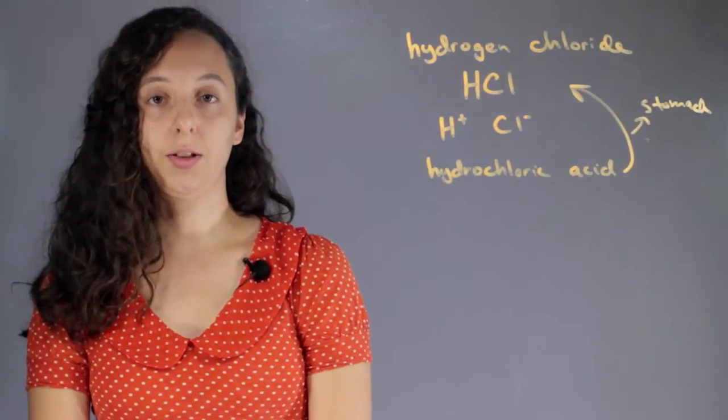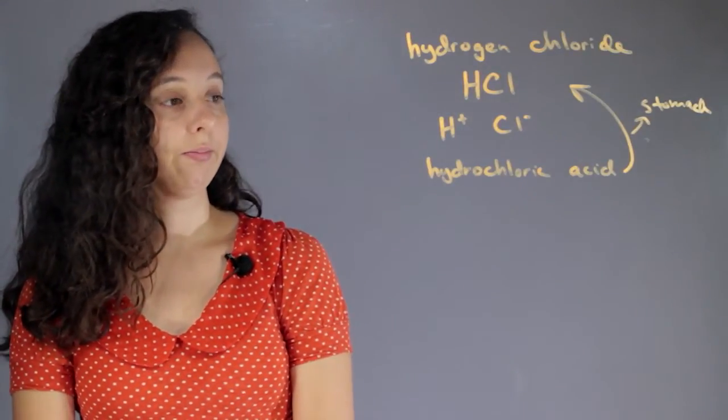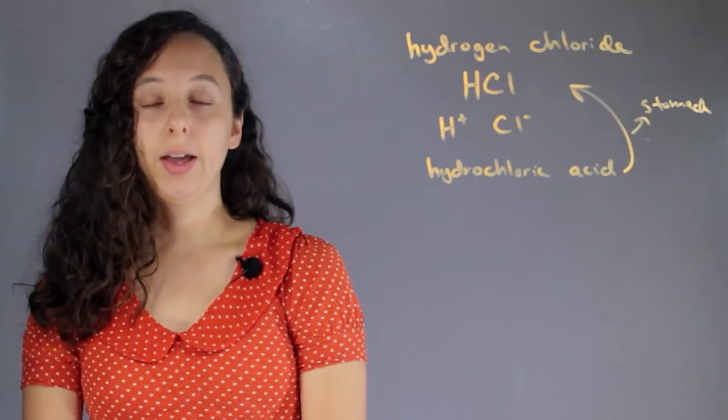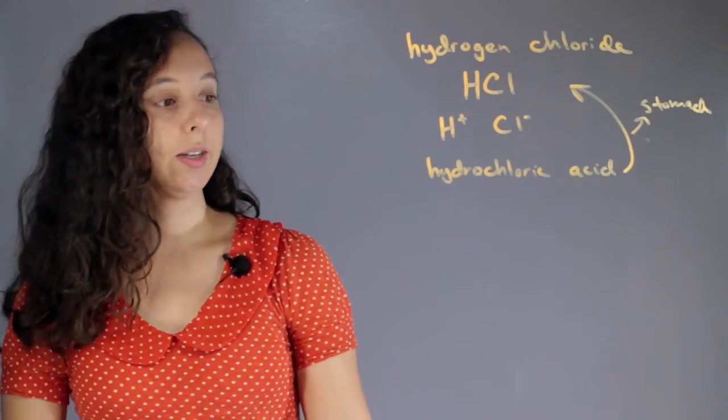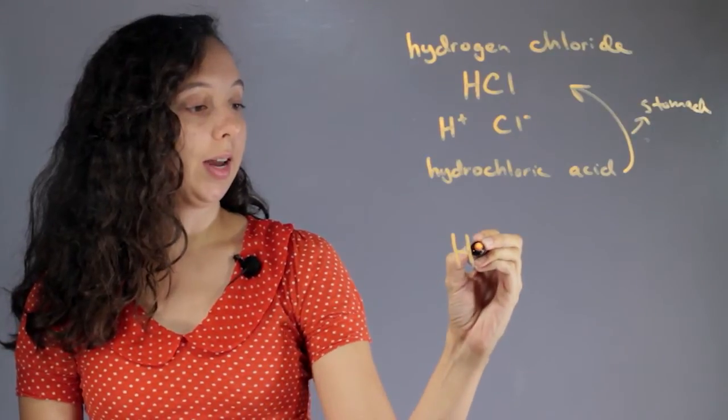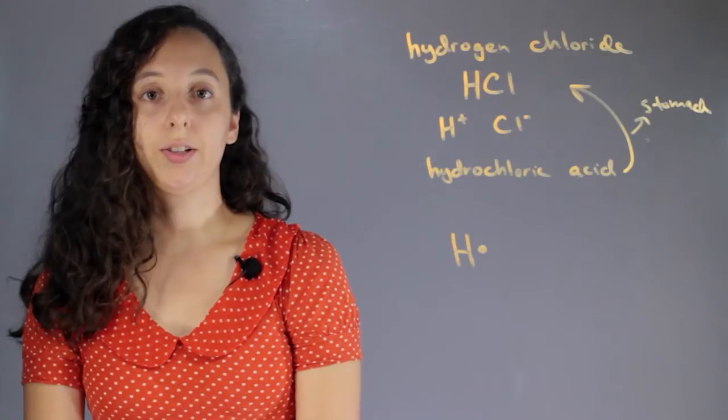Let's draw the electron dot or Lewis structure of hydrogen chloride. To do this, you'll have to check your periodic table and check how many valence electrons each atom has. Hydrogen is atomic number one, and it only has one electron. So we just draw that.